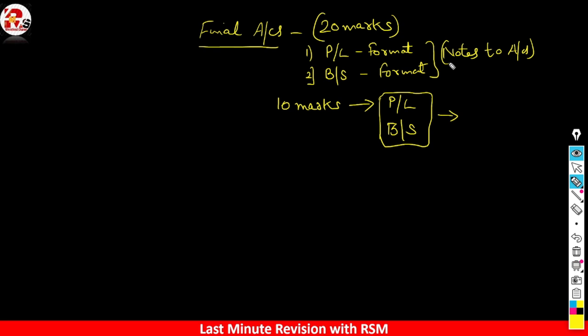In Final Accounts, you will get a question of 20 marks, or you will get a question of 10 marks, or you can get both in your paper. The examiner can ask you questions in 10 marks in alternative options. So in Final Accounts, what you want to learn is how to remember the format. We will discuss all the details — which points are inside — in today's session.